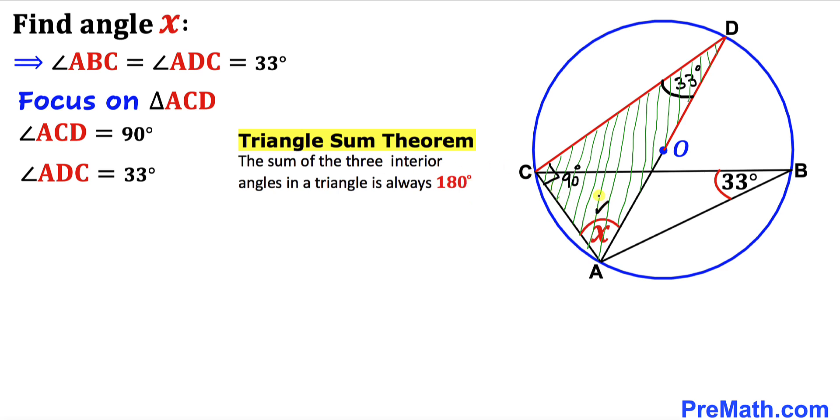So x plus 90 degrees plus 33 degrees equals 180 degrees. Let's combine the like terms on the left-hand side.